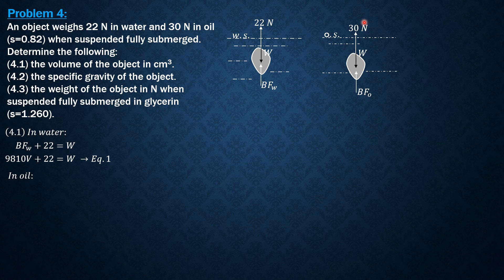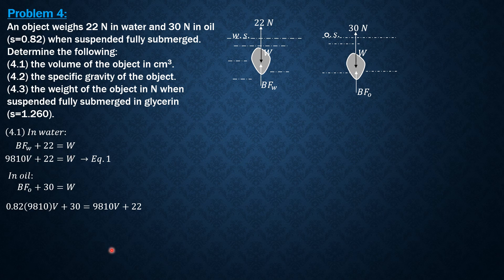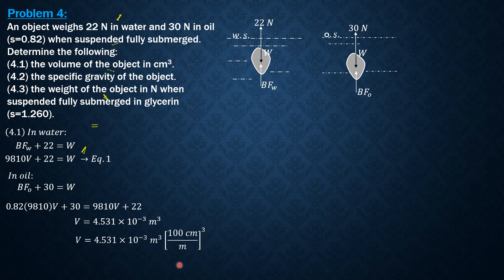Then in oil, summation of forces in Y equals 0: buoyant force in oil plus 30 equals W, and W is 9810V plus 22. Only V is the unknown. Solving for V in cubic meters, it is 4.531 times 10 to the negative 3 cubic meters. Converting to cubic centimeters, since 1 meter equals 100 centimeters: 4.531×10⁻³ times (100 cm/m)³ gives a volume of 4,531 cubic centimeters.